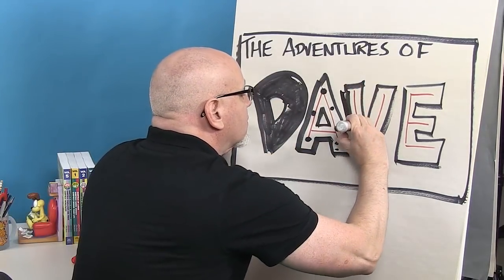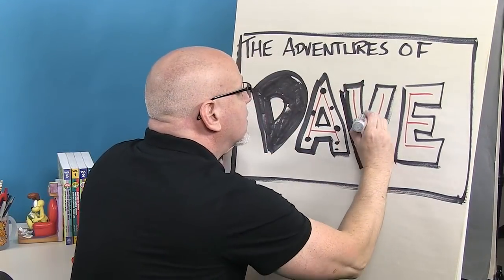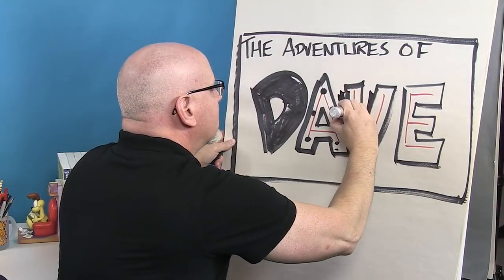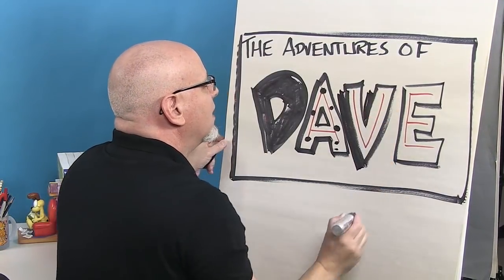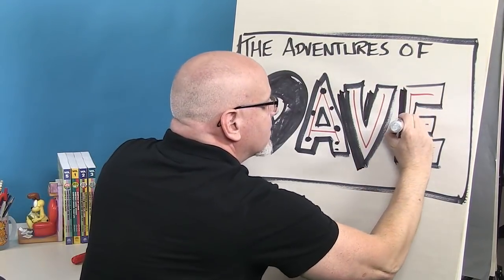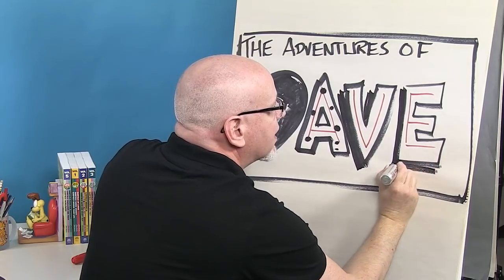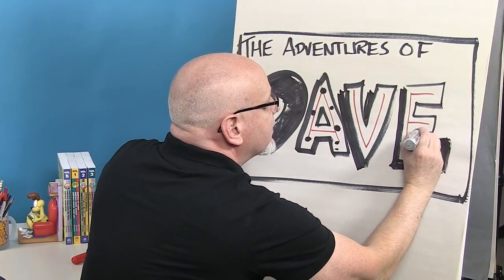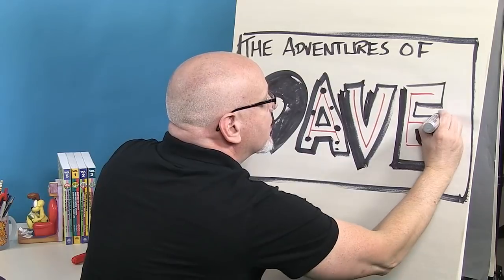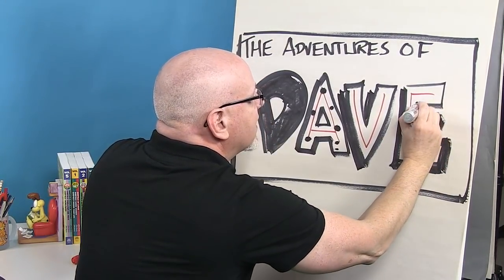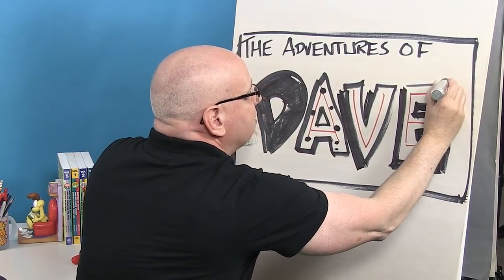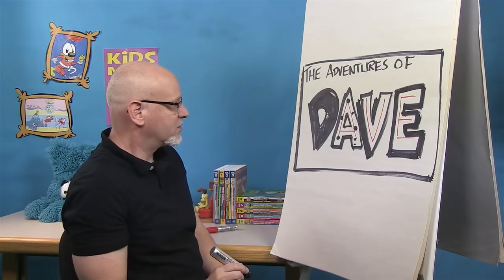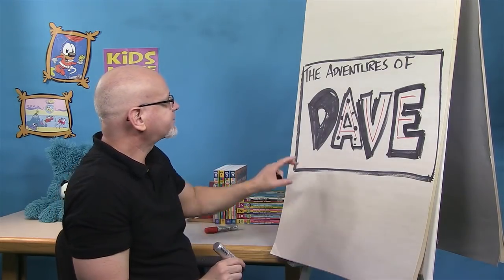You could also create some shadow — come off here and make kind of a shadow. And if you want, you can just maybe go around it a couple times, make it really thick, so that it jumps off the page. You want the name of your title character to jump off the page so your readers will definitely recognize that.